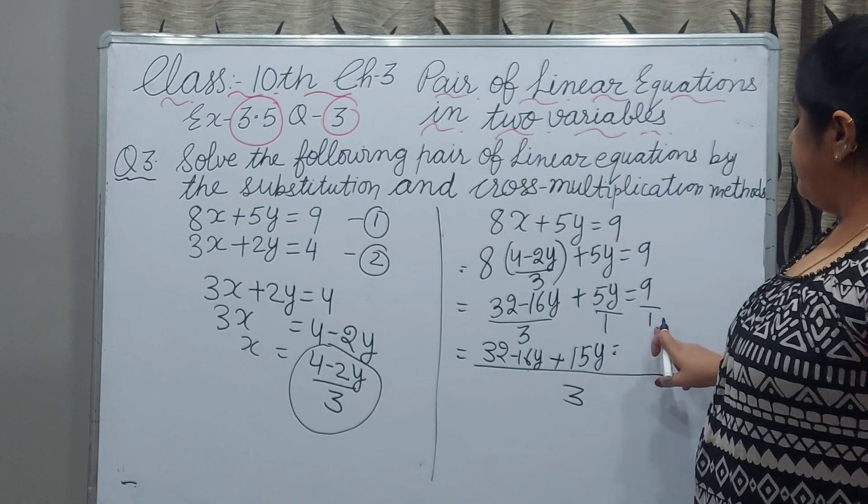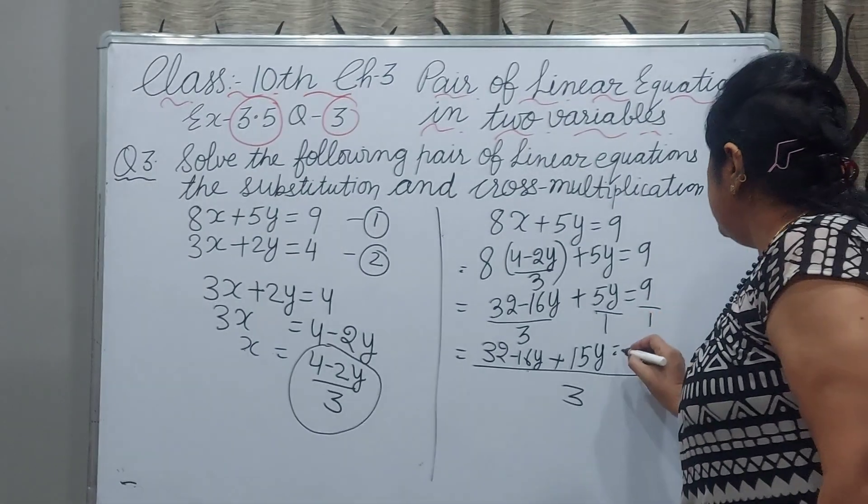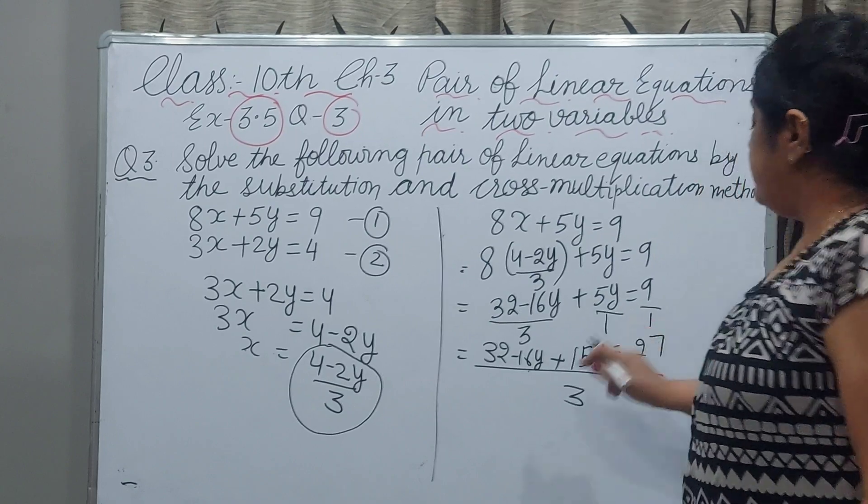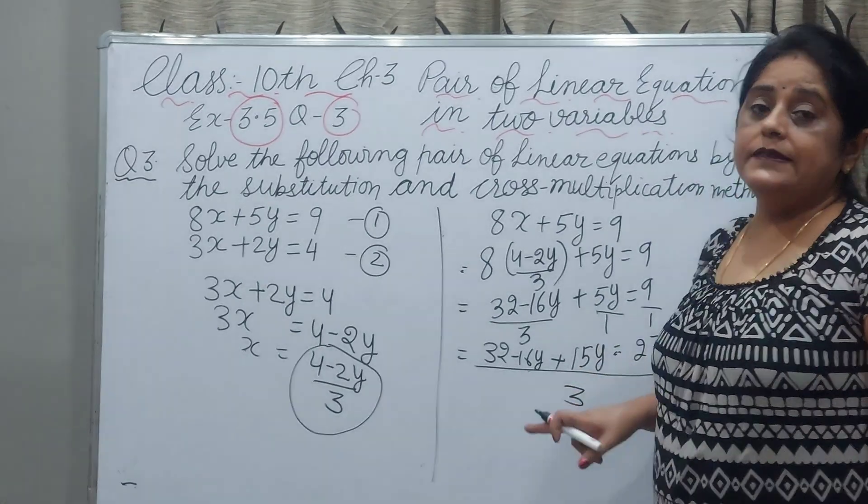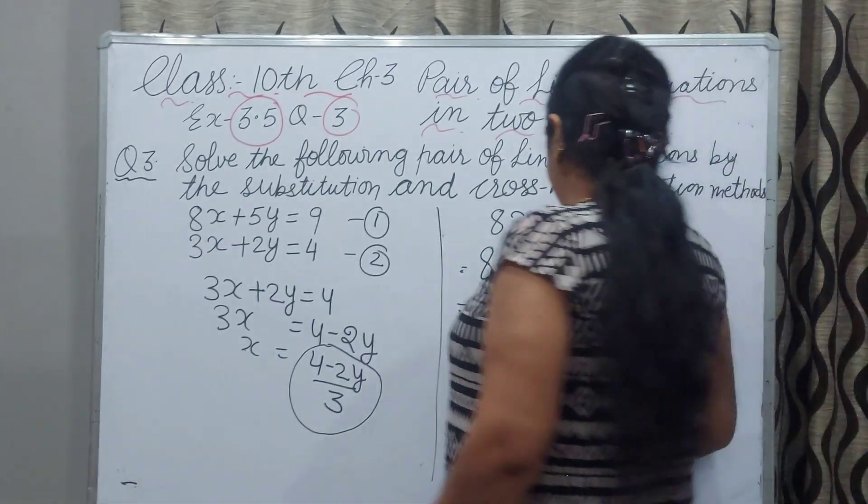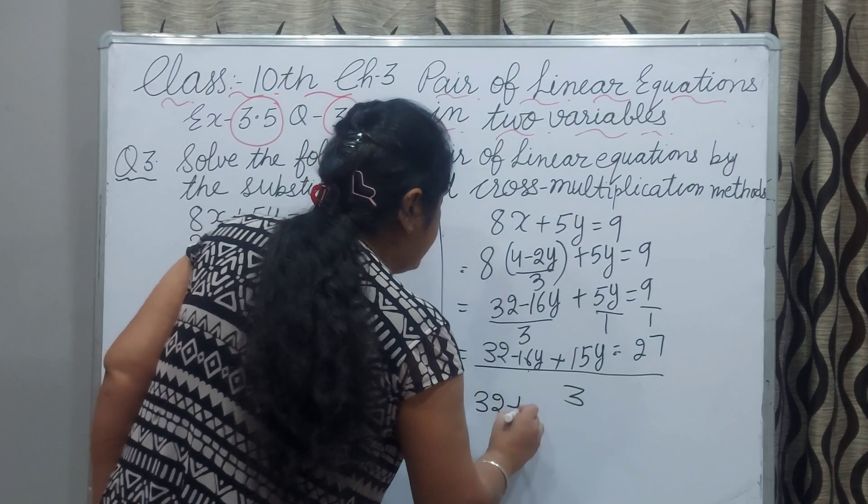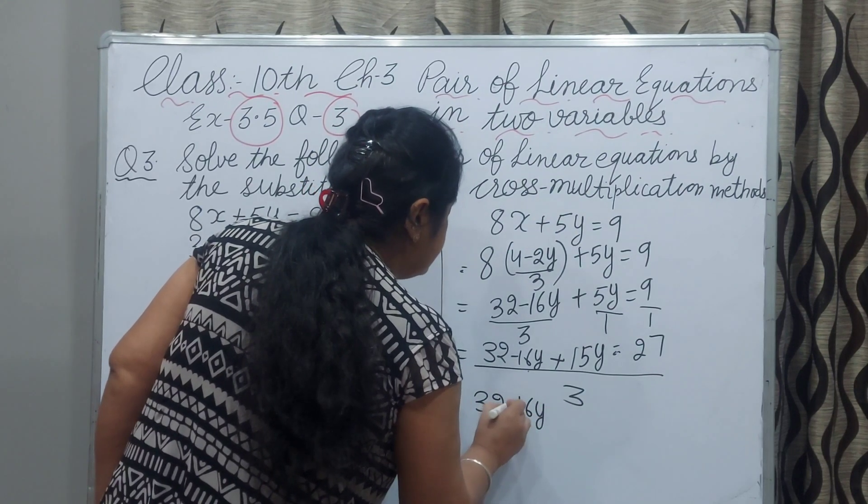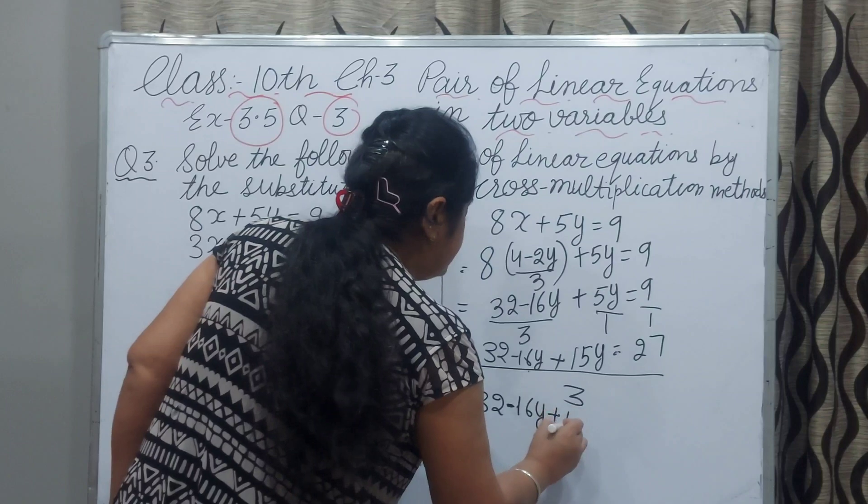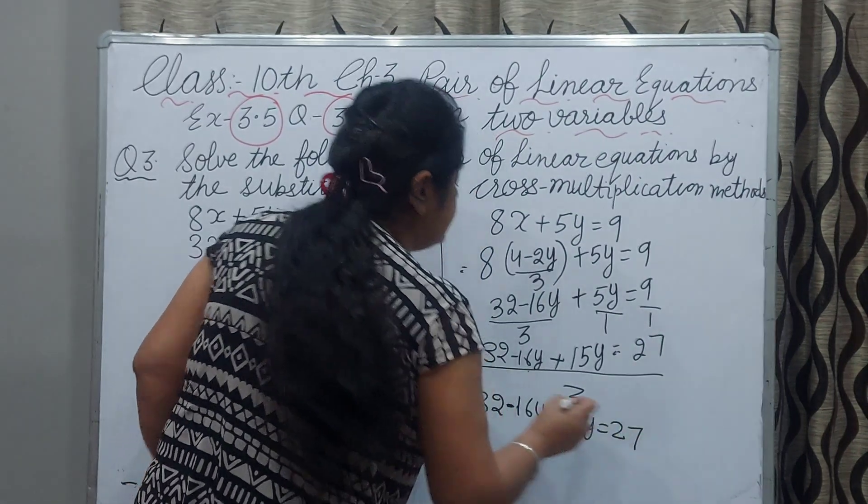3 divided by 1, 3, and 3 multiplied by numerator 9, that's 27. Because we have taken 3 for the whole equation, now this 3 will be removed and we can write 32 minus 16y plus 15y equals 27.